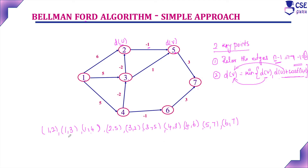According to this order, we will find the shortest distance. First relaxation: 1 to 2 distance is 6. 1 to 3 distance is 5. 1 to 4 distance is 5. For 2 to 5, the distance to vertex 2 is 6, so 6 minus 1 gives distance 5 for vertex 5. For 3 to 2, distance to vertex 3 is 5, so 5 minus 2 gives 3. But already vertex 2 distance is 6, so minimum is 3. Consider 3.